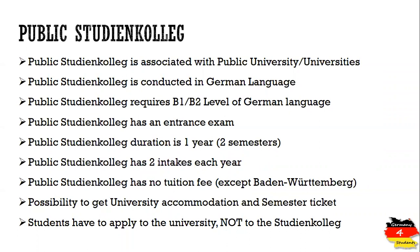In order to apply for public Studienkolleg, you must have learned at least B1, or in some cases even B2, level of German language. This means you have to have this level already acquired at the time of application — you first learn German until B1 or B2 and only then apply. There are however some exceptions, like TU Clausthal, which does not require any minimum level of German language. You can apply for TU Clausthal Studienkolleg even without having any German language certificate.